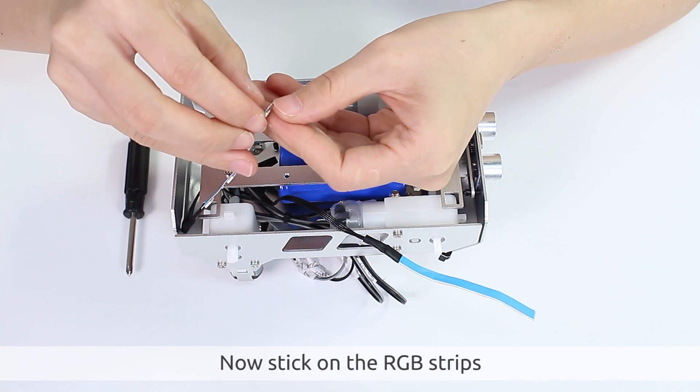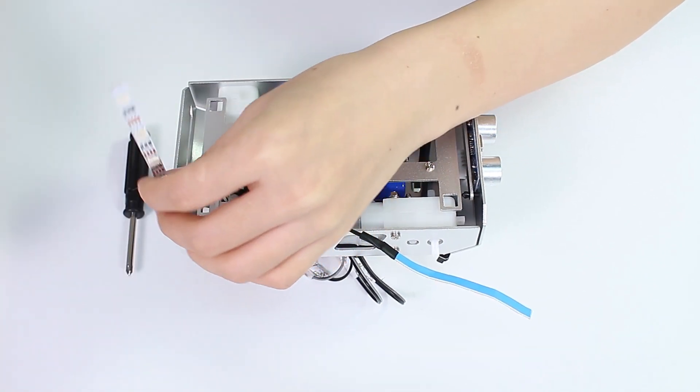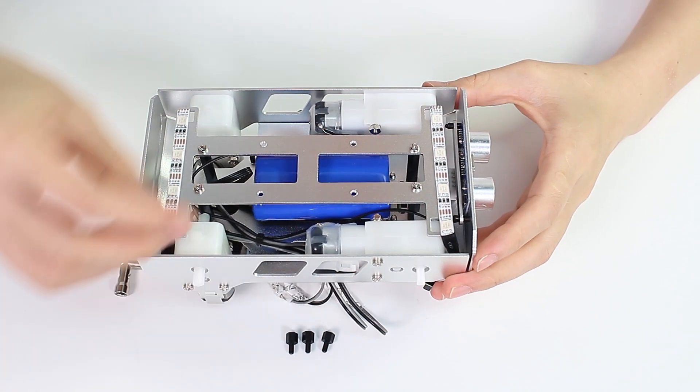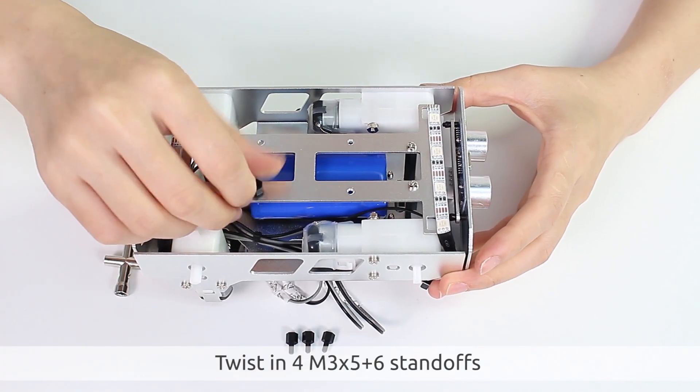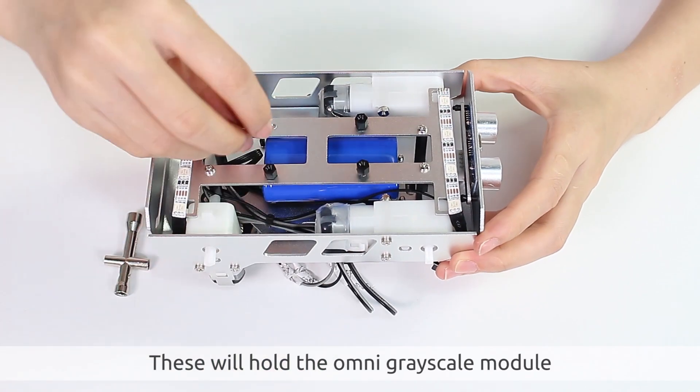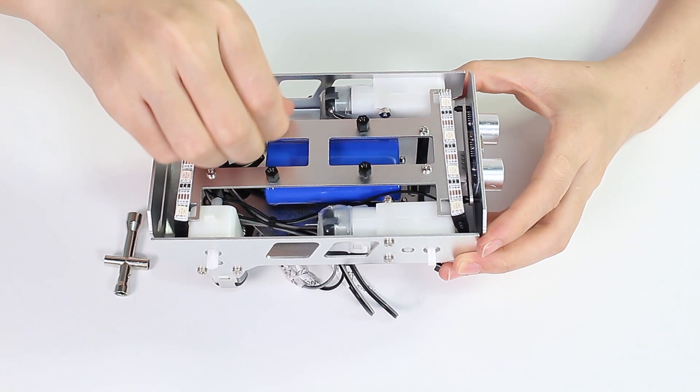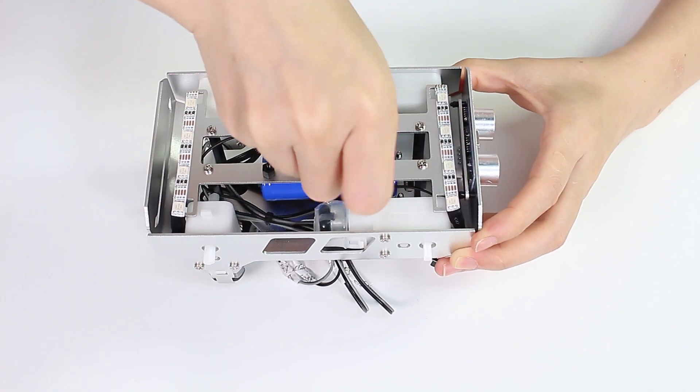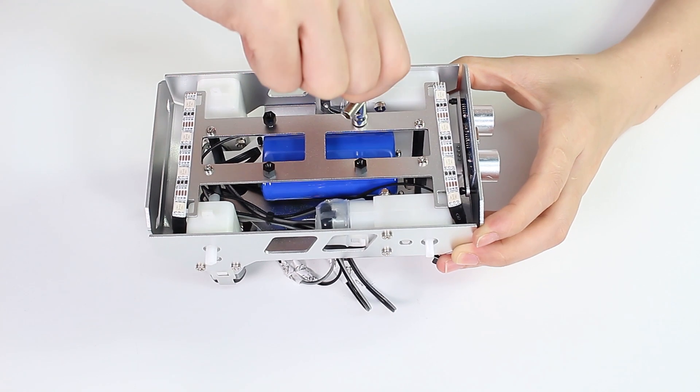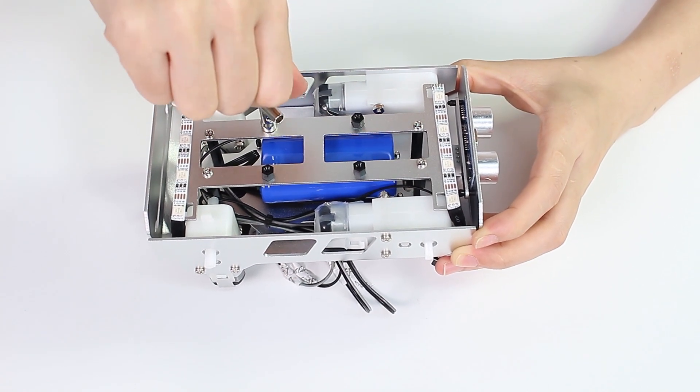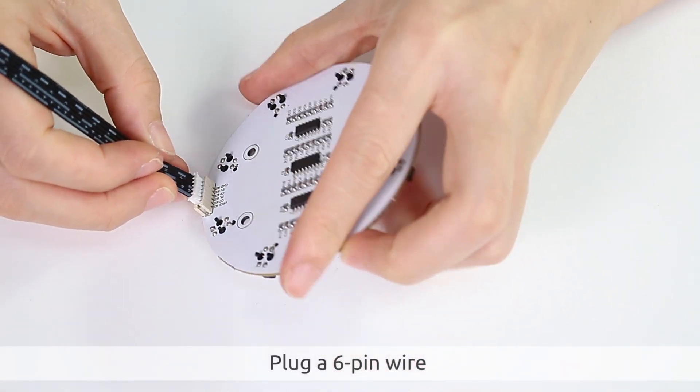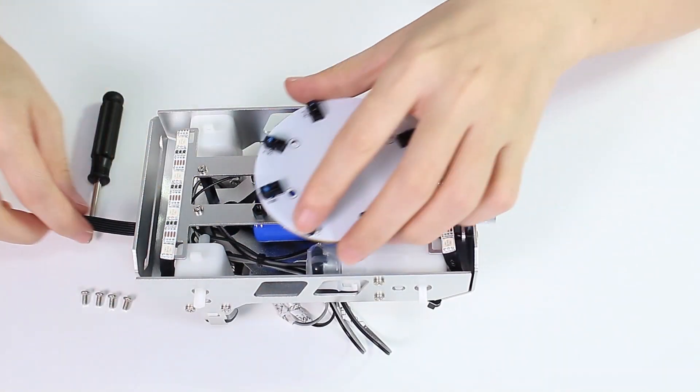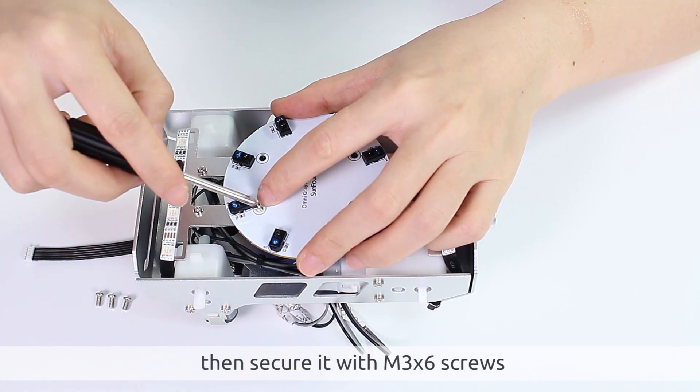Stick on the RGB strips. Twist in four M3 by 5 plus 6 standoffs onto the bottom plate. These will hold the omni grayscale module. Plug a 6-pin wire into the omni grayscale module, thread its wire through the hole, then secure it with M3 by 6 screws.